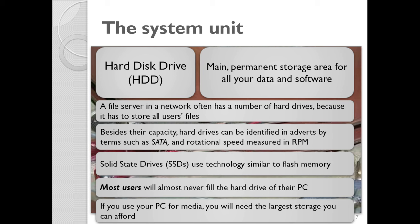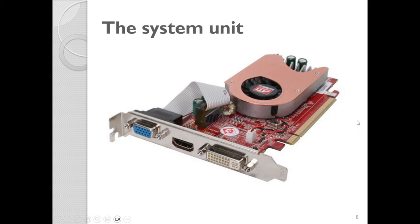Some folks use a combination of both. For example, in a gaming laptop you might have a 500 GB SSD with Windows and your programs on it, and then a separate 1.5 terabyte traditional hard drive for all your data storage. That way your PC boots up very quickly and opens programs quickly, while all other data is kept on a separate drive. You can customize according to what you need.